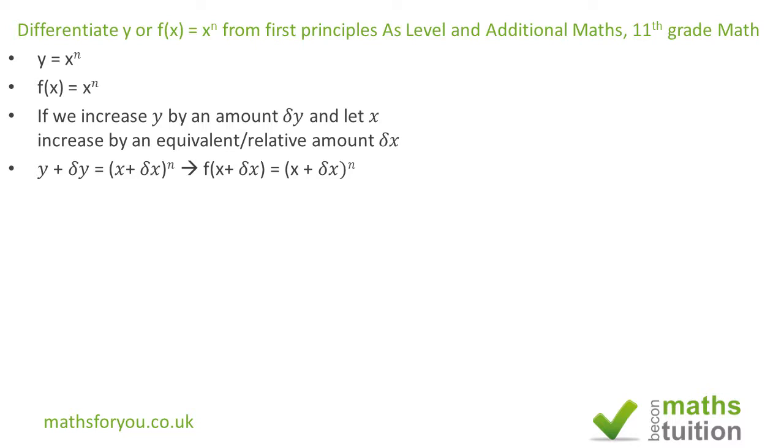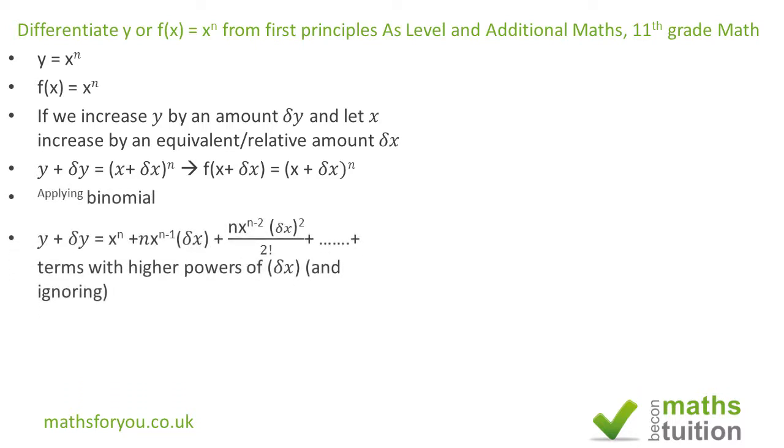Now if we apply a binomial expansion to the right hand side, we end up with x^n + nx^(n-1)δx + nx^(n-2)(δx)²/2! and we ignore the higher powers of δx.